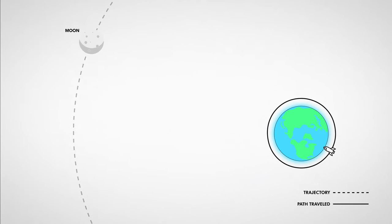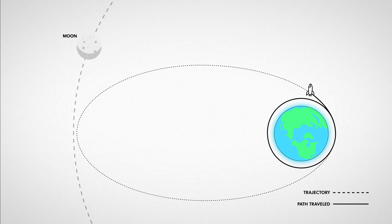Now for example, to get to the Moon, we need to point forward and fire our engines to expand our orbit until it intersects with the Moon's path.